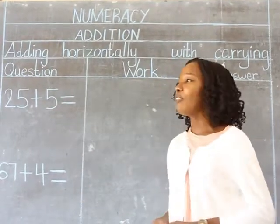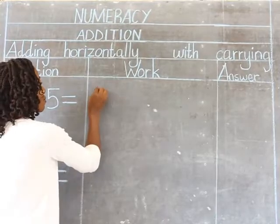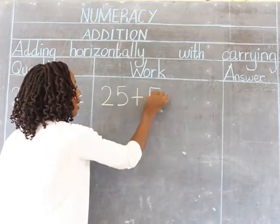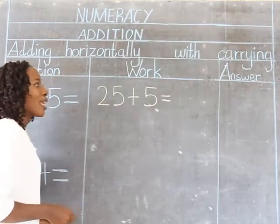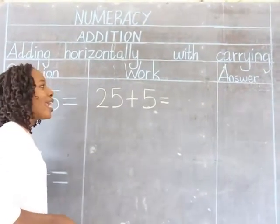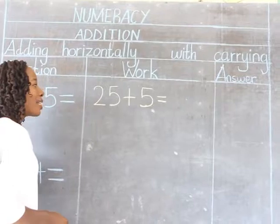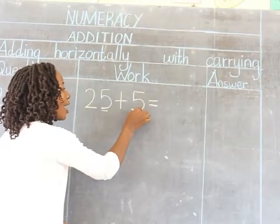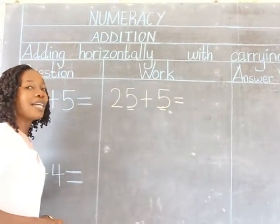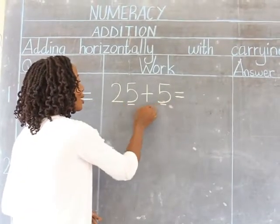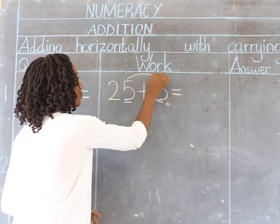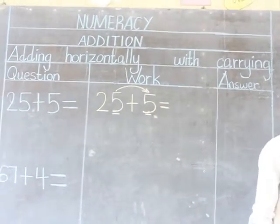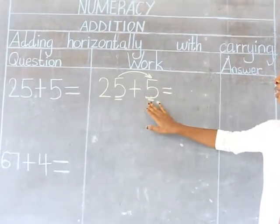I'm going to shift my question into the workspace. In adding numbers, we are supposed to start with the numbers in the ones place. Here we have 5 in ones and 5 in ones, so we are supposed to add 5 and 5. I'm going to count 5 building blocks first, then another 5 building blocks.